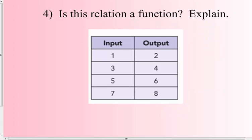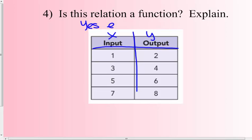Number four: is this relation a function? This could be our x, y table that we are graphing. Does each input have exactly one output? Yes. Why? Each input has exactly one output.